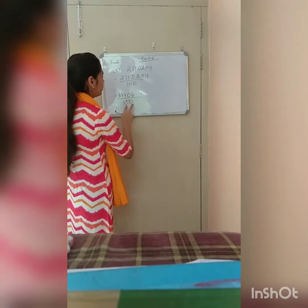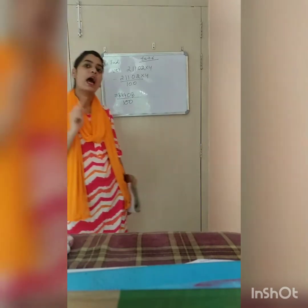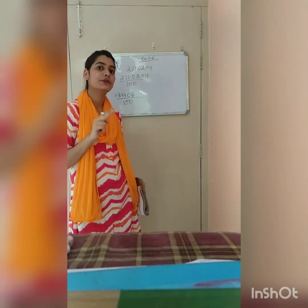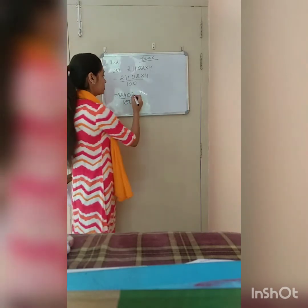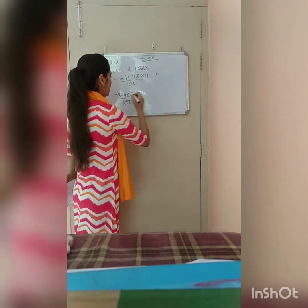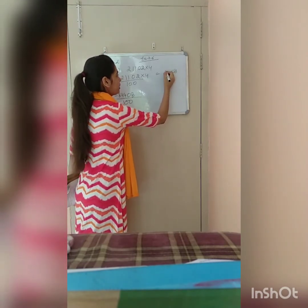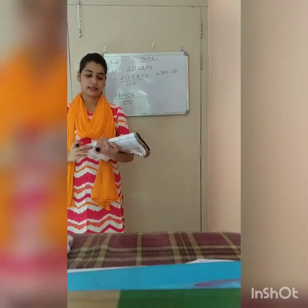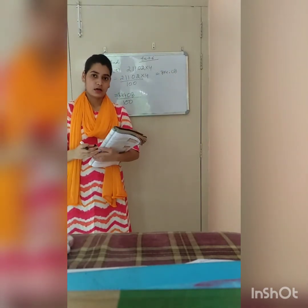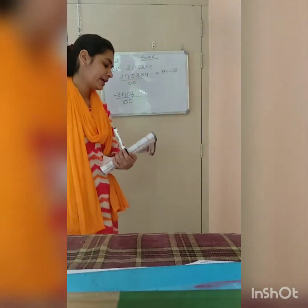Now there are two 0s in the denominator, so we will put the decimal after 2 digits in the numerator, counting from the backward. We will put the decimal after 4,408. So the answer is 844.08. Now move on to the next question.